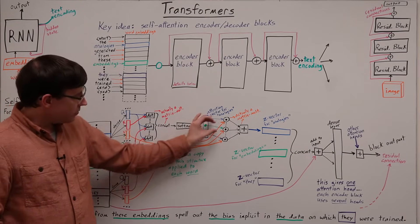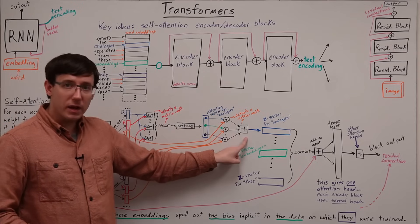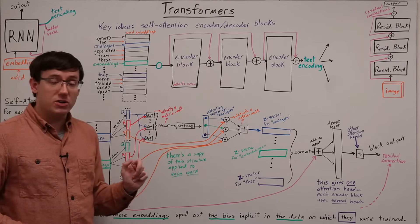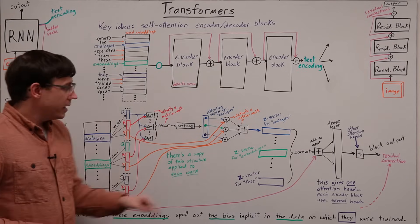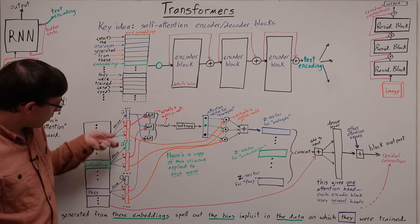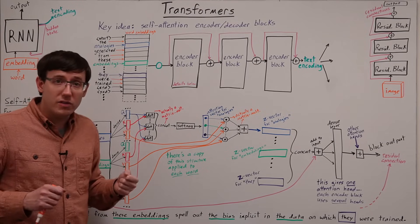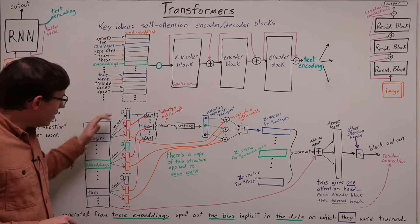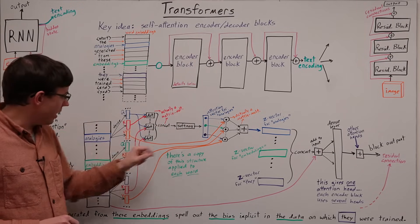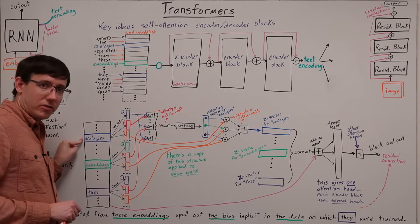So we are taking all of these value vectors and performing a weighted sum according to how much attention we want to pay. And this gives us an output vector that was computed from all of the values in the document, but weighted by how much we decided to pay attention to each of them on the word analogies.